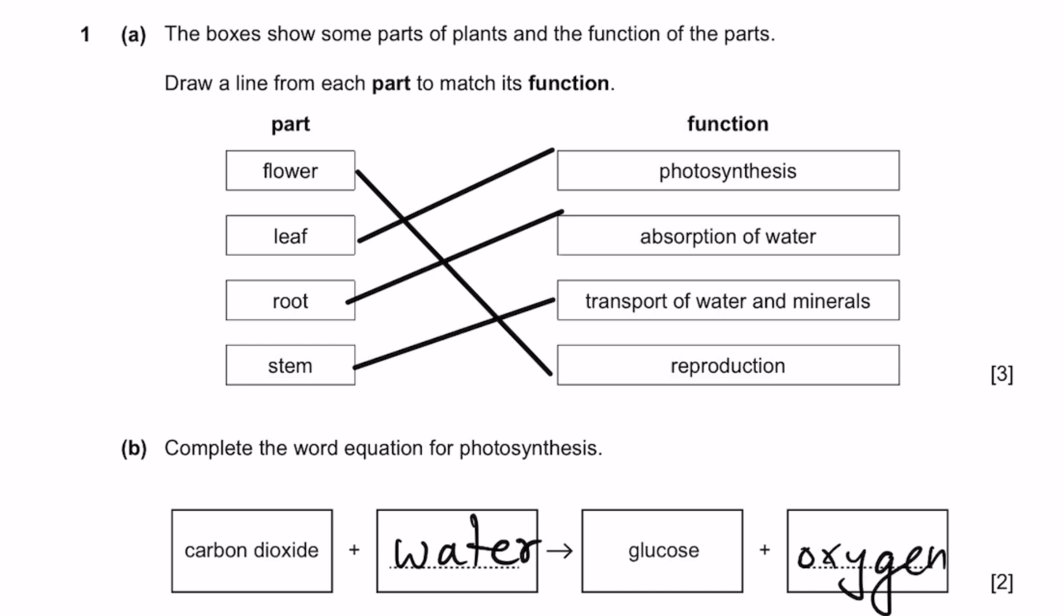Part B. Complete the word equation for photosynthesis. Carbon dioxide plus water gives glucose plus oxygen. Let's go to question 2.